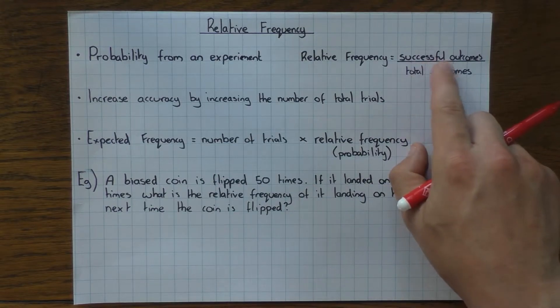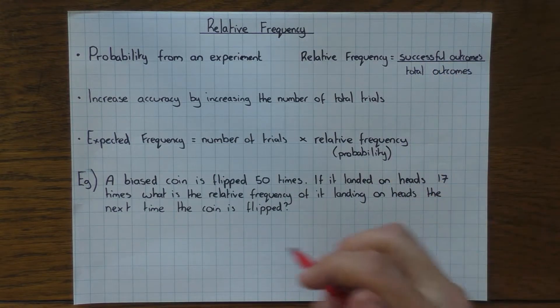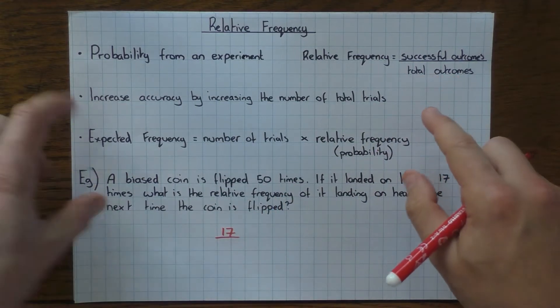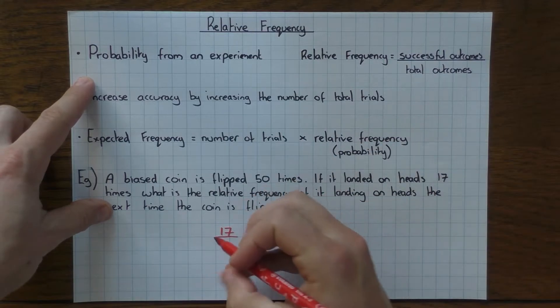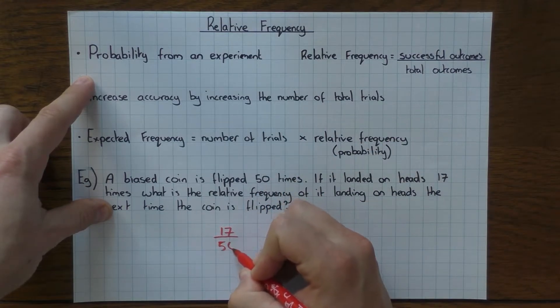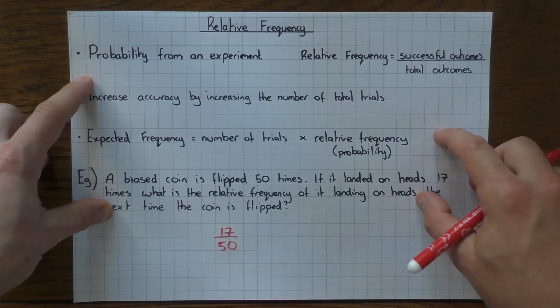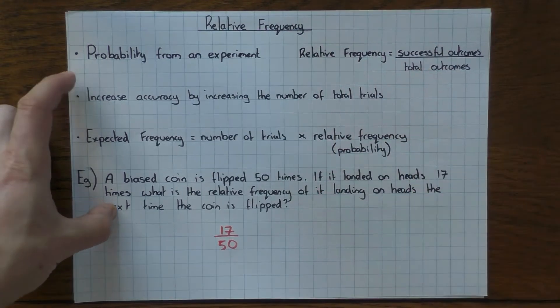So how many times was this successful? Well, it was successful 17 times, and how many times did they have a go at flipping the coin? 50. So quite simply we would say the relative frequency or the probability of it happening next time is 17 over 50. So that's looking at the first bit, let's have a look at some more.